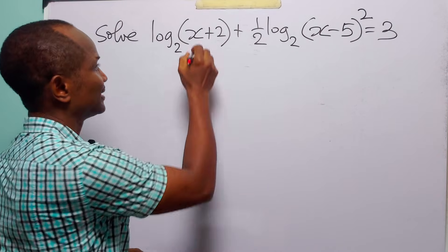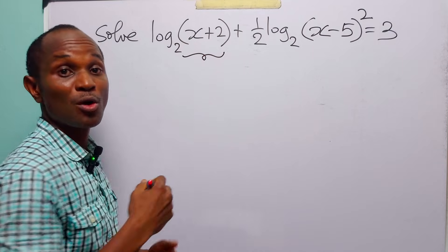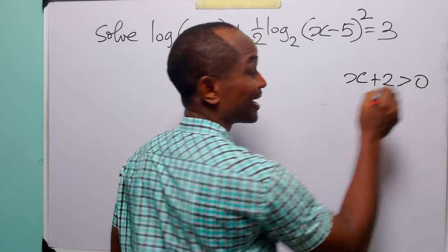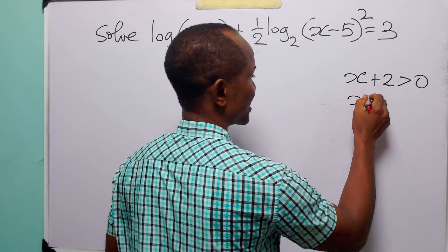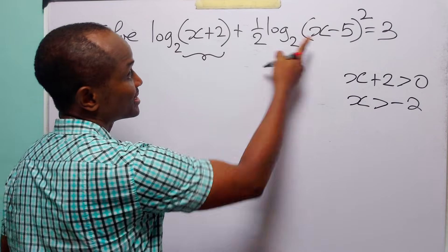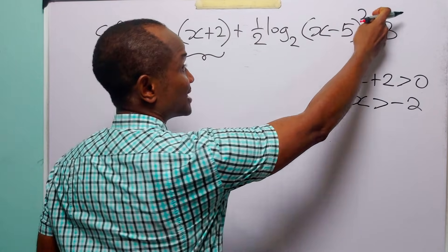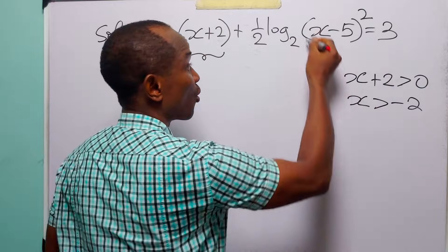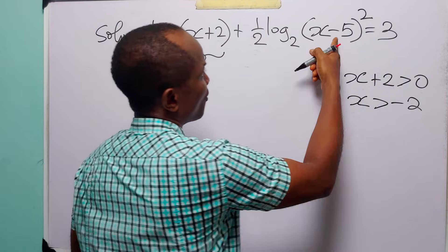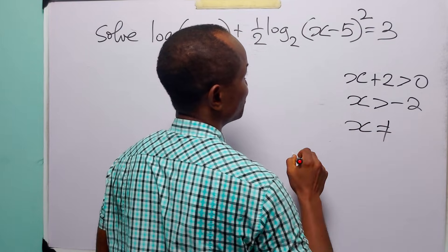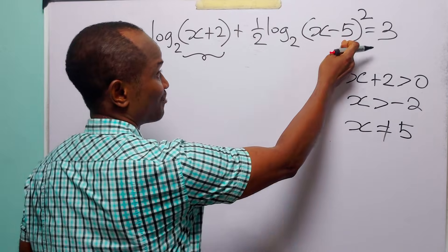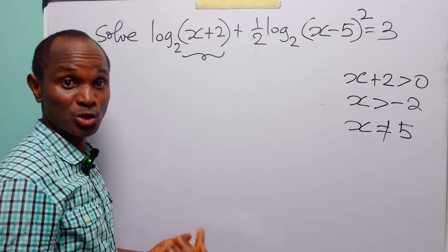For the first term to be defined, x plus 2 must be positive, so we have that x plus 2 must be greater than 0, and from here x must be greater than minus 2. For the second term, the square is going to make sure that the argument is always positive, so we only have that x must not be equal to 5, because when x equals 5 we get 5 minus 5 which is 0, and 0 cannot be the argument of a logarithm.